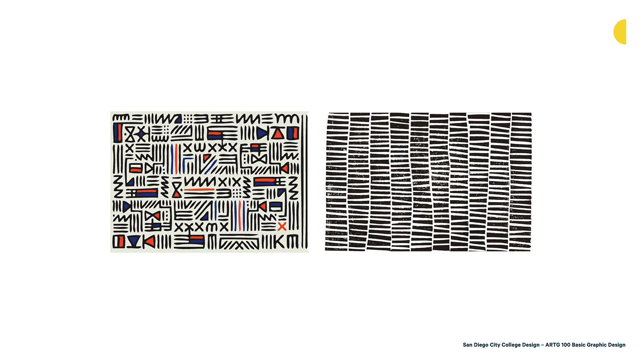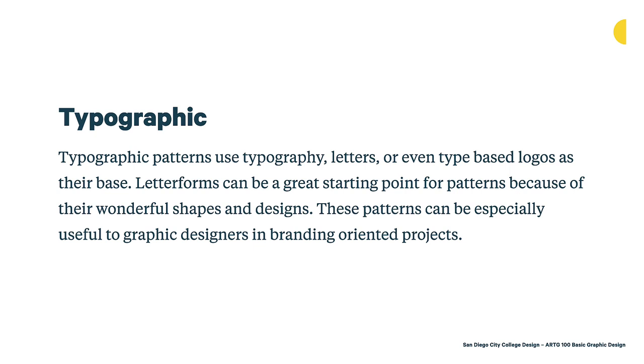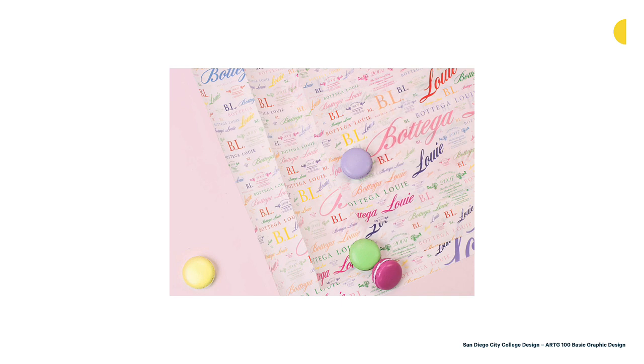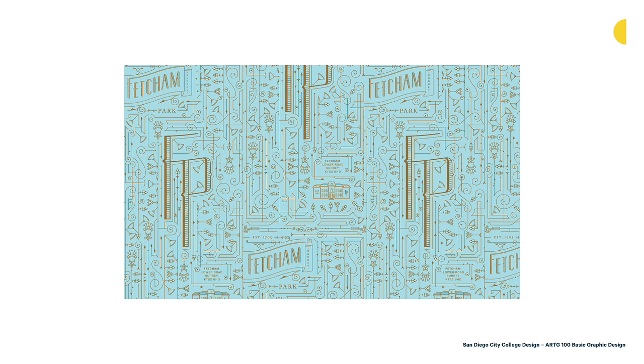You also have typographic patterns. Those use typography, letters, or type-based logos as their base. Letter forms can be a great starting point for patterns because of their wonderful shapes and designs. These patterns can be especially useful to graphic designers in branding-oriented projects. Here's a 2 and 7 locked and linked together to create a seamless pattern, and an uppercase R where stems are lined up to create vertical bands. From Leah Faust, this is paper used inside pastry boxes for Bottega Louie in Los Angeles — using their logo repeated as a typographic pattern. Another example by Kevin Cantrell for Fetchum Park, a high-end event space in the UK, uses the Fetchum logo as part of the pattern.